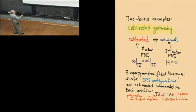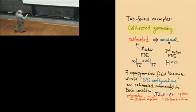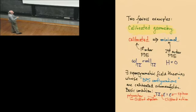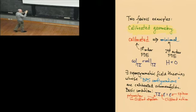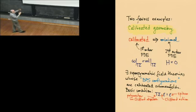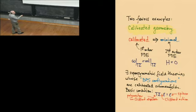There are supersymmetric field theories whose BPS configurations are calibrated submanifolds — Comran talked about this. The basic condition is that you have some nonzero spinor which is an eigenspinor of the Clifford product by the polyvector you get from the tangent plane. Using the metric, this lives inside the exterior algebra and can act on spinors by Clifford product. Whenever you have such an equation, it implies that the tangent plane is calibrated by the differential form obtained by squaring that spinor.